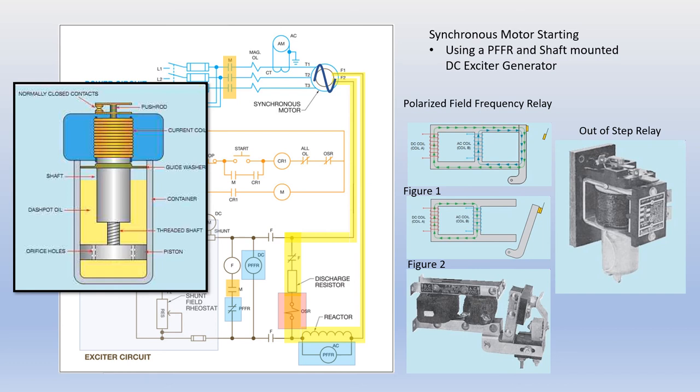The armature of the out-of-step relay will try to pull in, but will be resisted by the dashpot oil in the container pushing against the piston. This will prevent the relay from immediately changing the state of the normally closed OSR contacts. If the motor takes too long to synchronize and lock in step with the rotating magnetic field, the out-of-step relay will continue to push the piston up as the dashpot oil flows through the orifice holes in the piston. When the oil is all displaced, the armature shaft of the out-of-step relay will come in contact with the push rod and open the contacts in series with the control relay CR, stopping the motor. This will protect the motor when it fails to start.